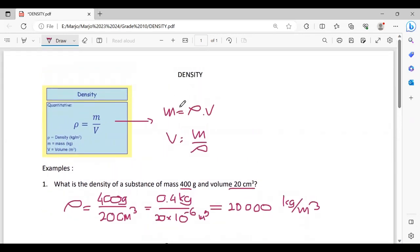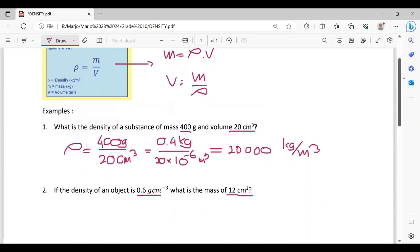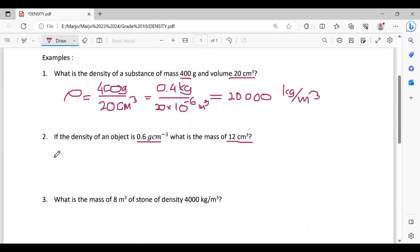As I just said, mass equals ρ times v. It means mass equals ρ times v. ρ is 0.6 gram over centimeter cube calculated with 12. And if 0.6 times 12 becomes 7.2, okay, 7.2 grams.